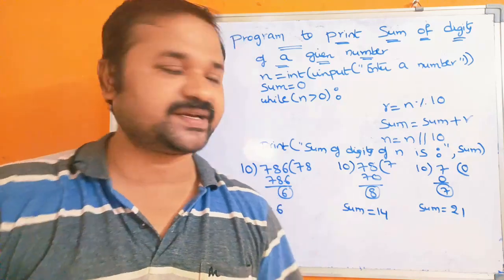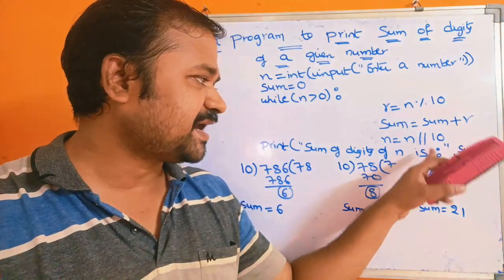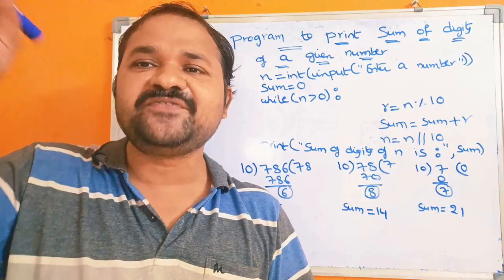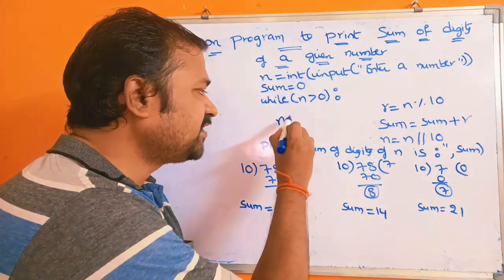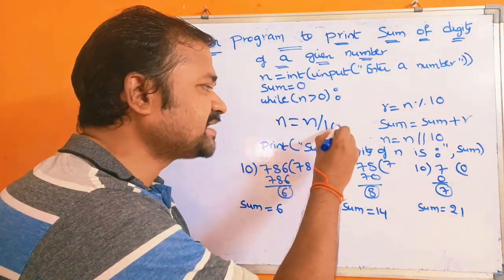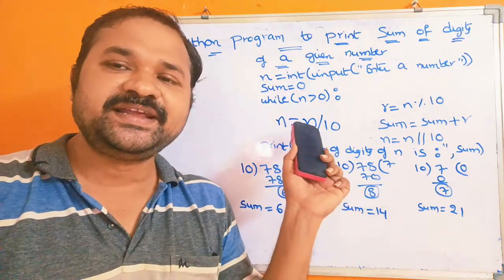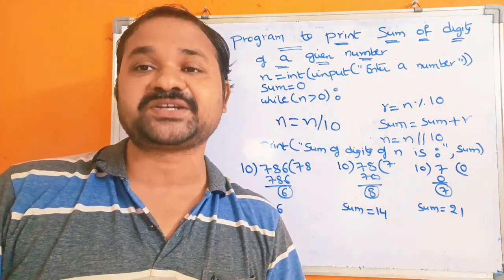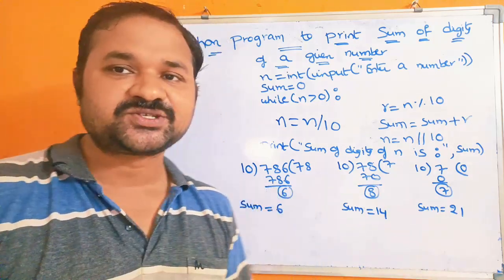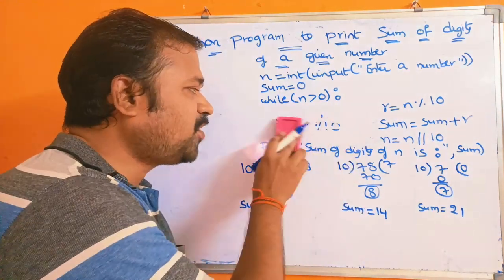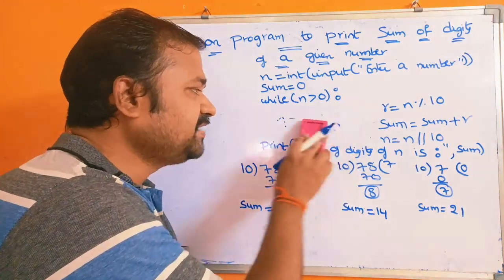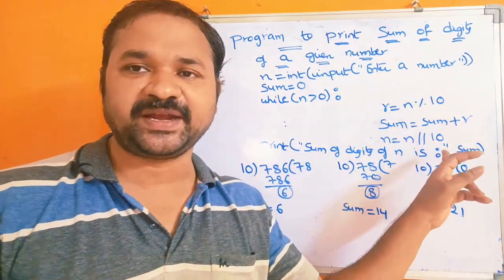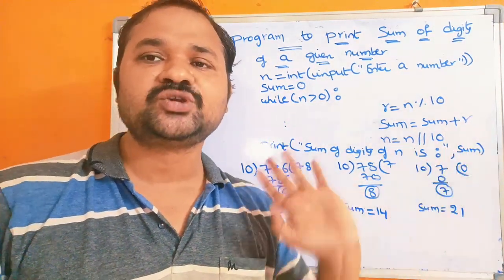In place of the double slash, if we use only one slash, the problem is that Python's division operator always gives a floating point number as the result, so the result may change. That's why we have to perform the division operation with the floor division or integer division operator — we have to use two slash symbols.